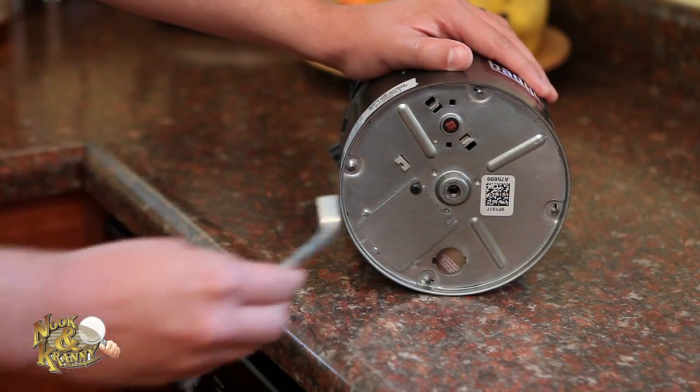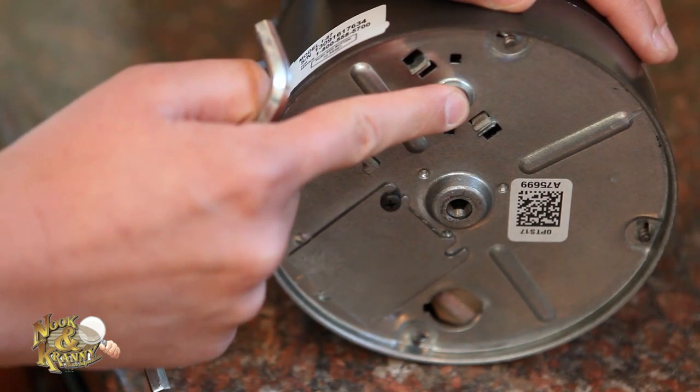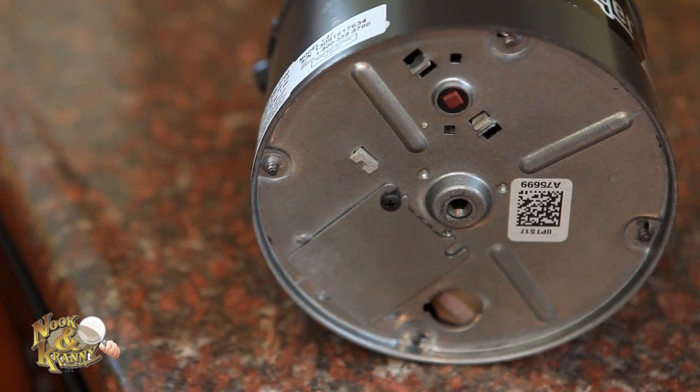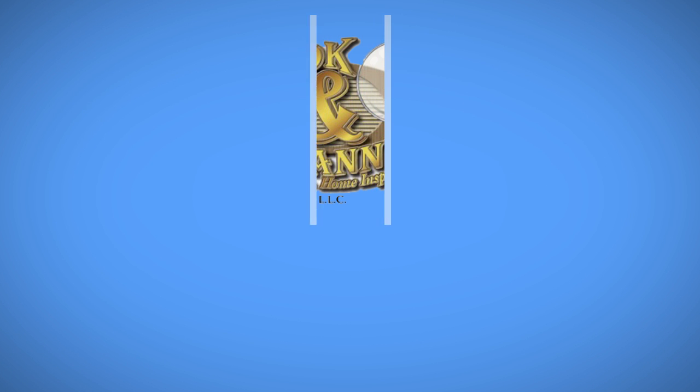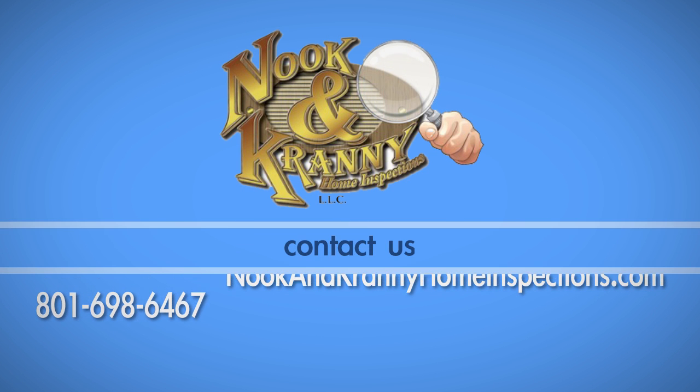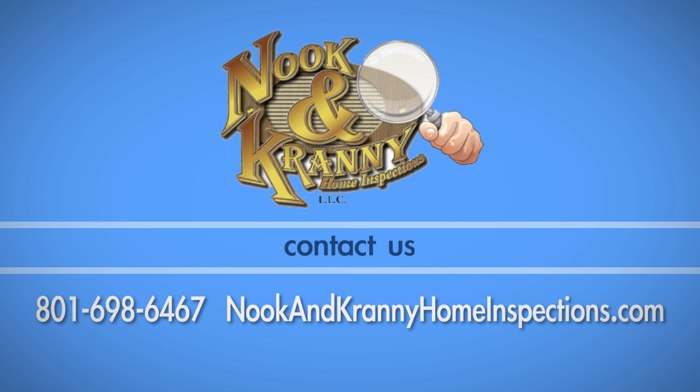Once this is accomplished, push the red reset button and you should be up and running again. If you have any questions about this process, call Nook & Cranny Home Inspections at 801-698-6467.